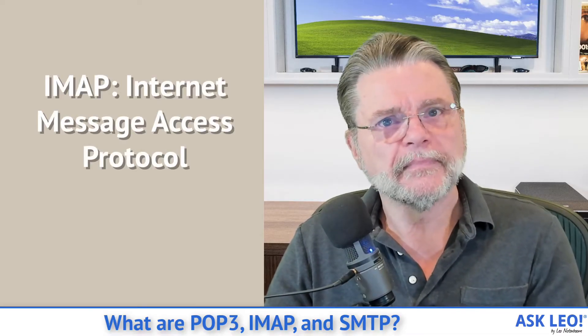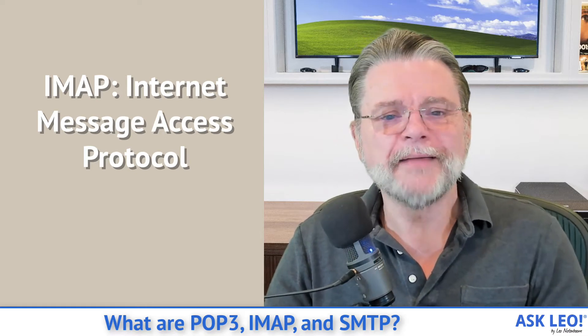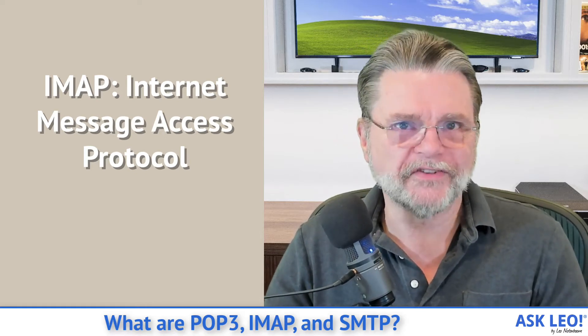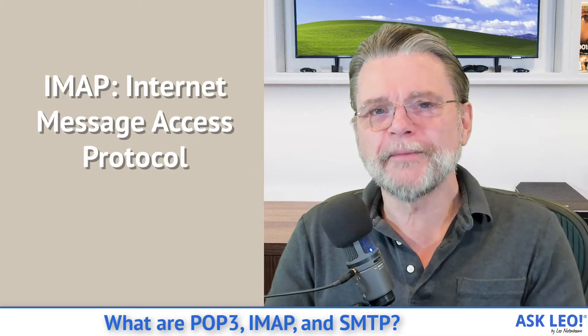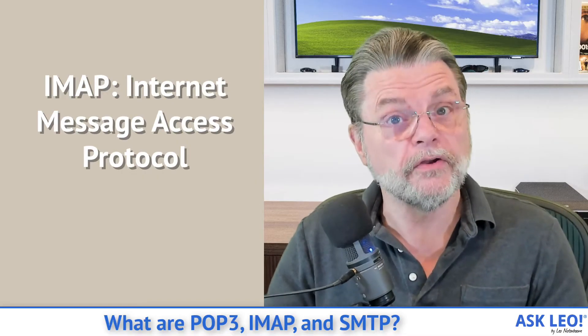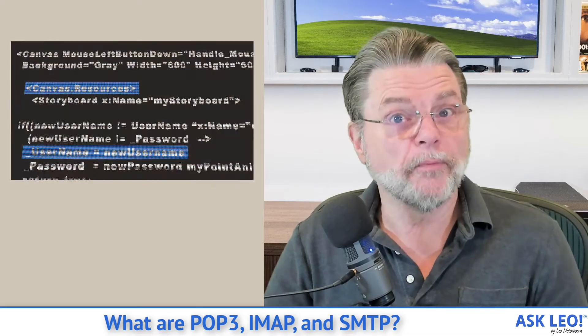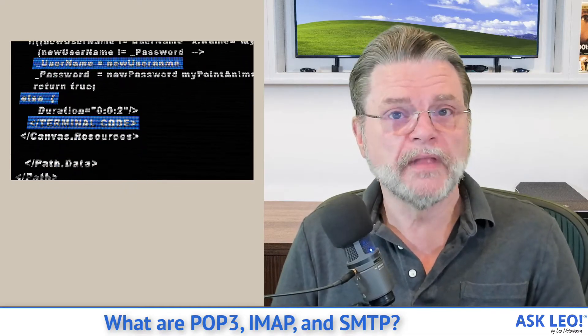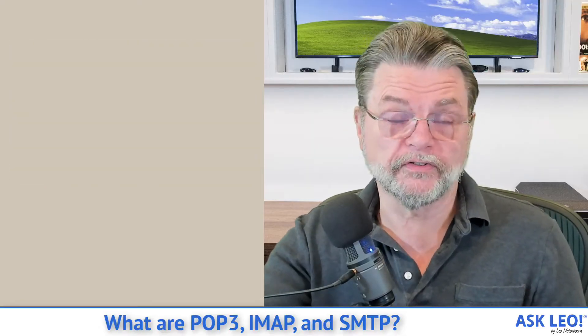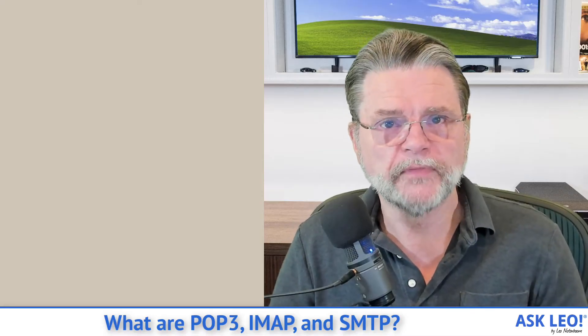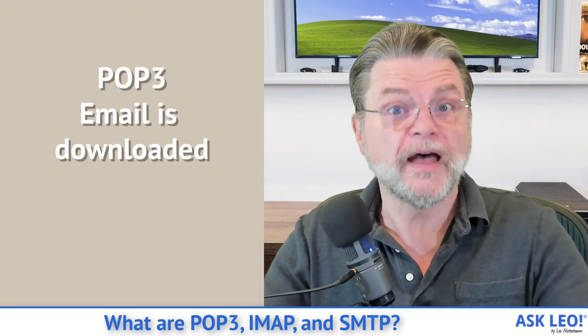IMAP stands for the Internet Message Access Protocol. It's kind of like POP3 in that it is a language used between an email program running on your device to access your email on your email service's servers. The difference is that IMAP makes a fundamentally different assumption about where the email lives. With POP3, you're downloading it so that your master copy of your email is on your PC — just that one copy.